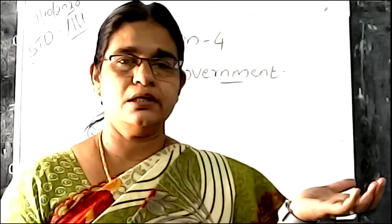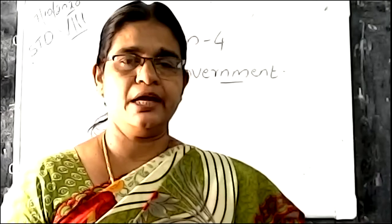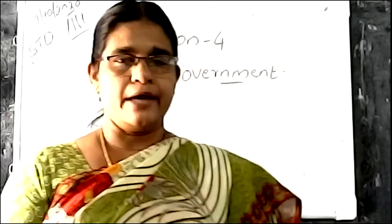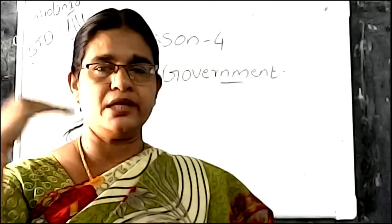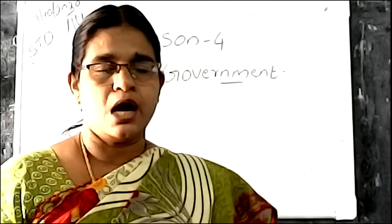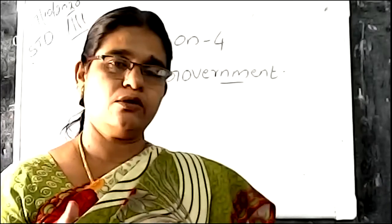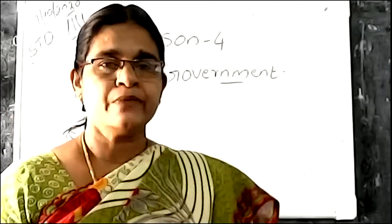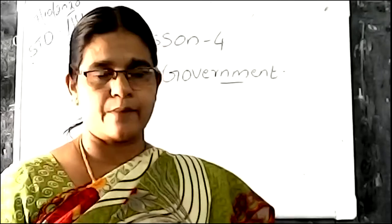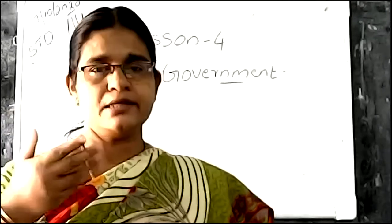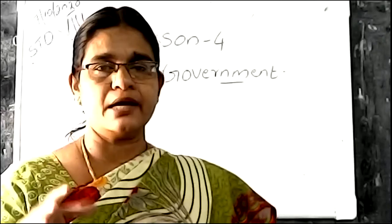The law is made by the legislature; implementing the law is the function of the executive. The third organ is the judiciary. Who are in the judiciary? Supreme Court, High Court, District Court, Sub Court, Municipal Court, and the Magistrate Court. The Supreme Court is the highest court in our country, located in New Delhi. In each state there is a High Court. Each district has a District Court, and below that is the Sub Court, then the Municipal Court and Magistrate Court.